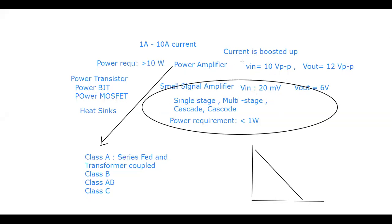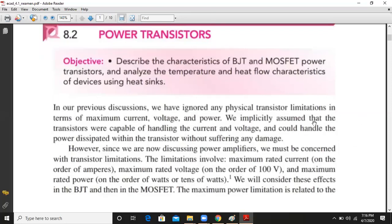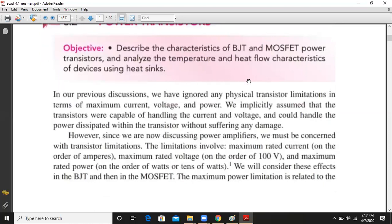Remember the differences: in a small signal amplifier the AC input amplitude is around millivolts, whereas in a power amplifier the input is around 10 volts peak to peak. So a small signal amplifier's output may be fed to the input of a power amplifier. In this section we will describe the characteristics of BJT and MOSFET power transistors — they are not much different, only the current and voltage ratings differ — and then we will see why heat sinks are required.